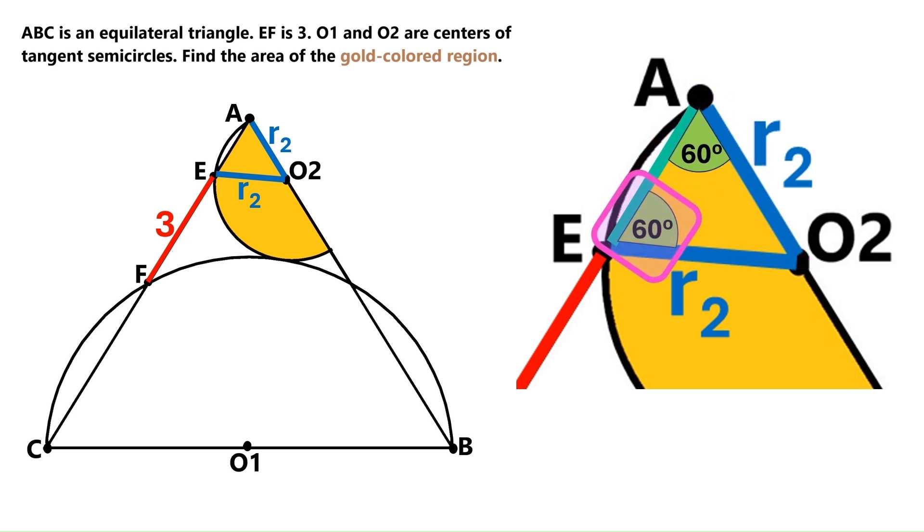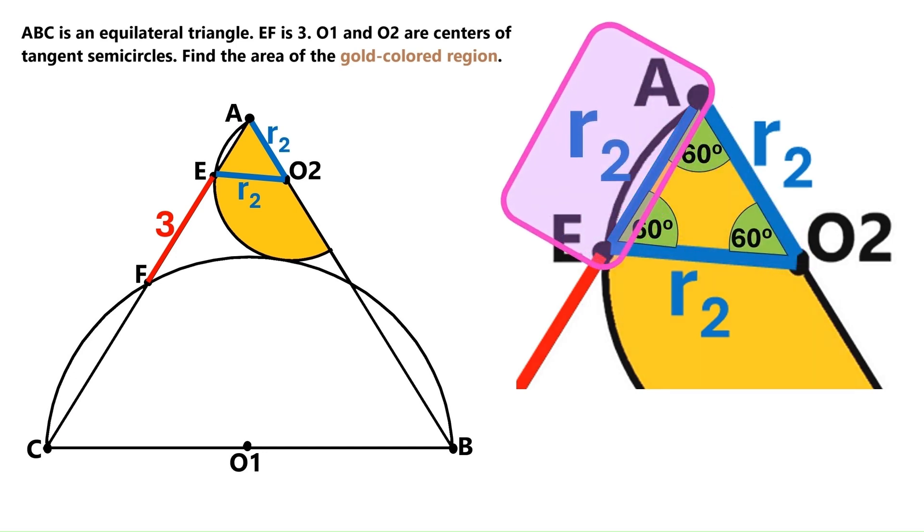This angle must also be 60 degrees. These two angles add up to 120 degrees, so this third angle is also 60 degrees. And this triangle is an equilateral triangle, which means this side is also R2. Let's put R2 here.